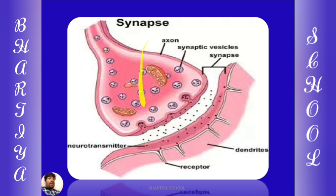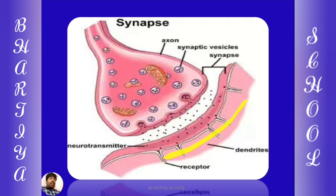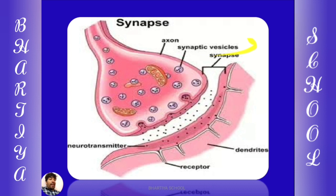यहाँ पे देखिए जो axon है और जो dendrite है दूसरे neuron का, इन दोनों के बीच में जो gap junction है उसको synapse कहा है। जो nerve ending है axon की, और dendrite of another neuron — उन दोनों के बीच जो gap junction है उसे synapse कहते हैं। जब electrical impulse nerve ending तक आता है तो synaptic vesicles के अंदर एक neurotransmitter होता है जिसको acetylcholine कहते हैं।